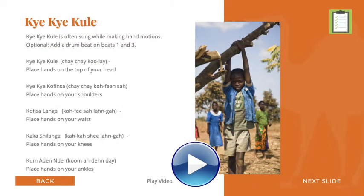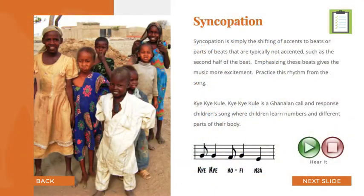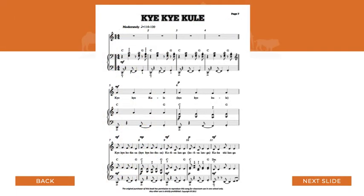Che Che Kule is an African call-and-response song. Many folk songs around the world demonstrate influences from other parts of the world. The syncopation is good preparation for piano repertoire, such as March in D by Bach. Piano accompaniment music is also included, which could be used for the teacher accompaniment or for a more advanced student.